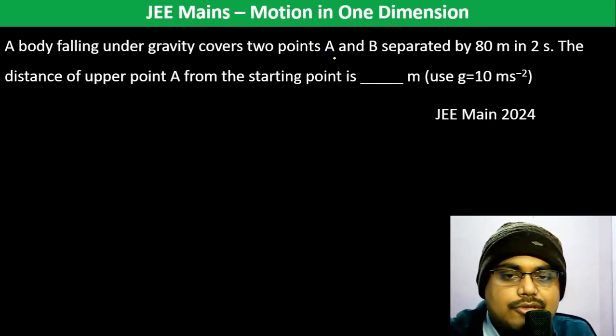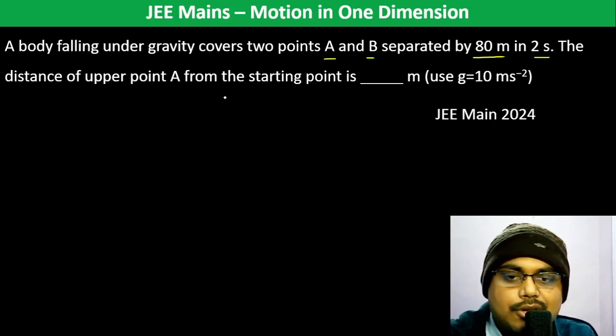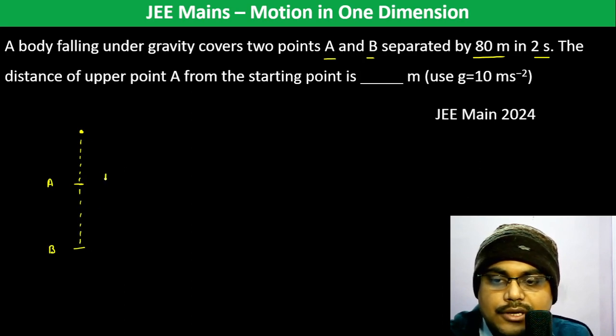A body falling under gravity covers two points A and B separated by 80 meters in two seconds. The distance of upper point A from the starting point is... Okay, so you start at some point, then reach A, then B. You have at time T the body is at point A, and at T plus 2 it's at point B.